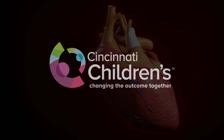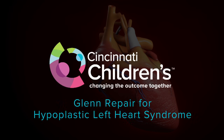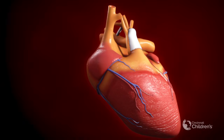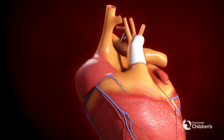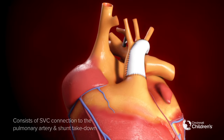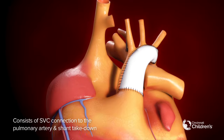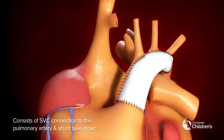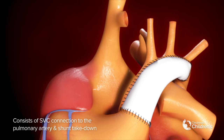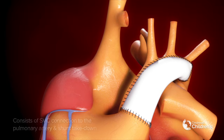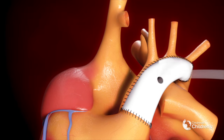Bidirectional Glenn is the second stage surgical palliation for hypoplastic left heart syndrome. This consists of superior vena cava connection to the pulmonary artery and BT shunt takedown.